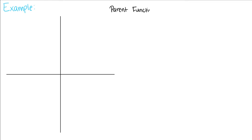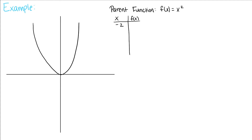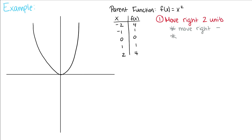Let's look at an example. Let's take the parent function f(x) = x². That function is a parabola. Our table of values between negative 2 and 2 gives us 4, 1, 0, 1, and 4. First, let's move this function two units to the right. Our f(x) becomes f(x - 2). We use minus because we're moving to the right — whenever we move right or left, we use the opposite sign. Everywhere there's an x, we put x - 2.